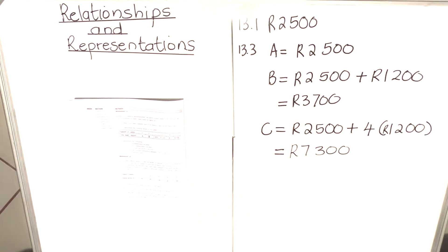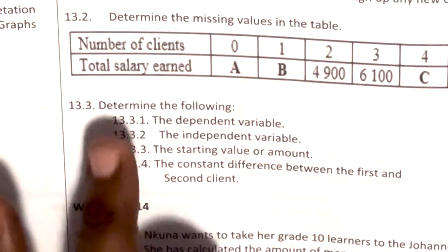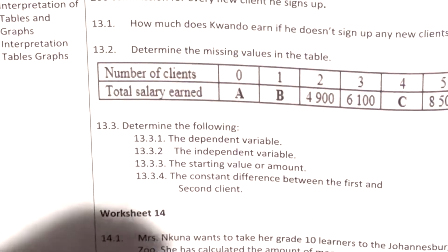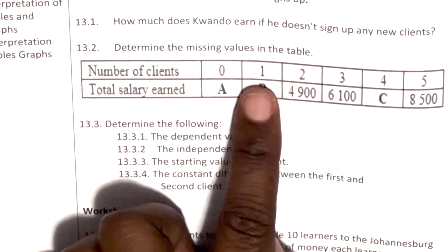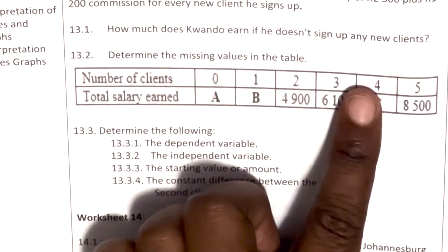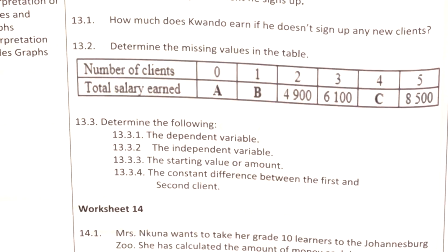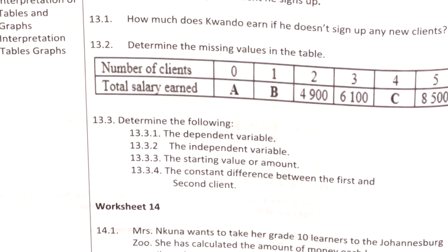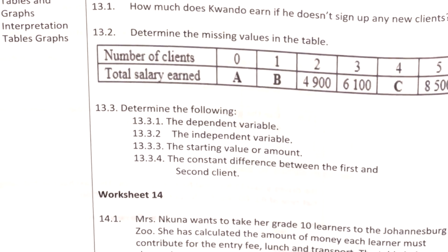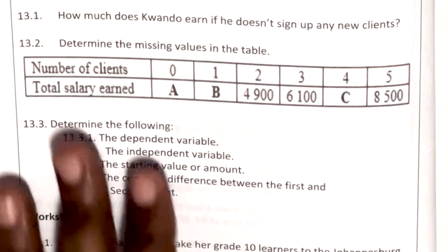For 13.3.1, they ask for the dependent variable. The dependent variable is the one that depends on the other — the bottom row depends on the top row, so the dependent variable is total salary earned. Normally in a table the dependent variable is on the bottom row and the independent variable is on the top row. The independent variable is number of clients.